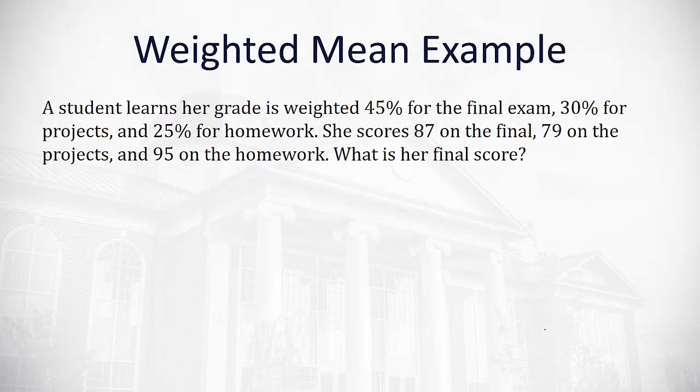So for example, if a student learns that her grade is weighted 45% on the final exam, 30% for projects, and 25% for homework. So let's organize that here. We're talking about our weights here. For the final exam, the weight was 45%. For the project, the weight was 30%. And for the homework, the weight was 25%. And she scores. For the actual scores, these are our individual x values. Actual scores were 87 on the final, 79 on the project, and 95 on the homework.